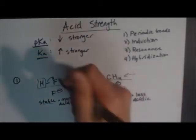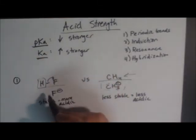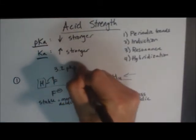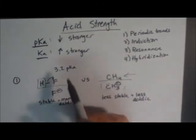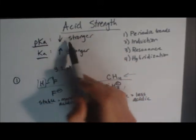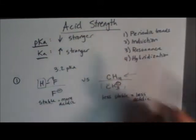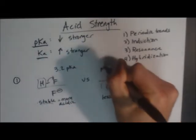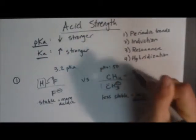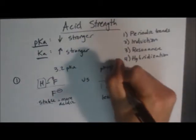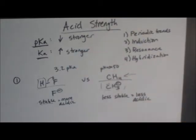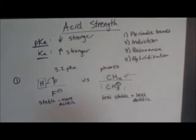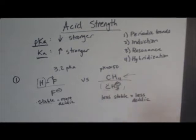I'm going to give you the values now. This acid — the fluorine one — is going to have about a 3.2 pKa. A lower pKa is stronger. This one — the carbon — has a pKa of about 50 or so. So a higher pKa means it's going to be a weaker acid. That makes sense.